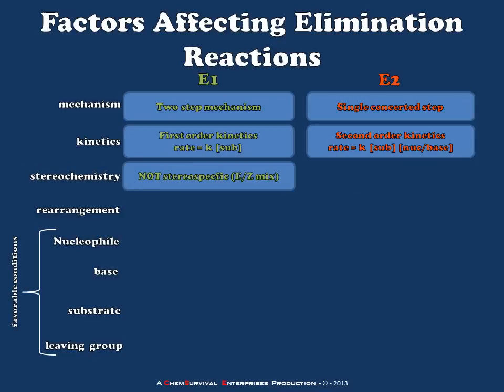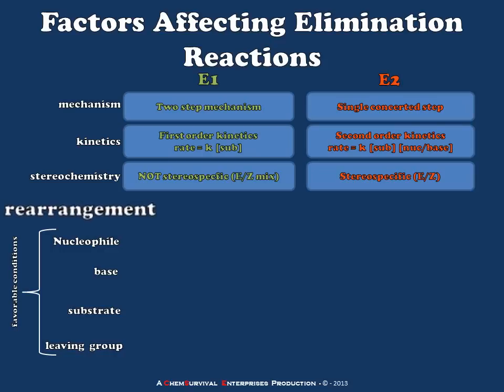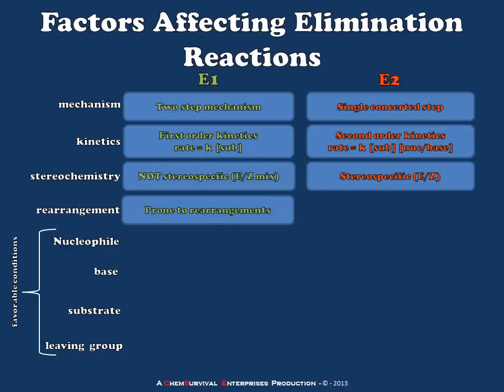In the case of potential stereochemistry, since we're creating alkenes during elimination reactions, we have to ask ourselves if there's a potential for E/Z isomerism. With the E1 reaction mechanism, there is no stereospecificity. However, in the E2 reaction, we can get stereospecific reactions if we start with a chiral starting material. Carbocation rearrangements are common in E1 reactions because they proceed through a carbocation, but because the E2 happens in a concerted step, there is no opportunity for rearrangement to occur.